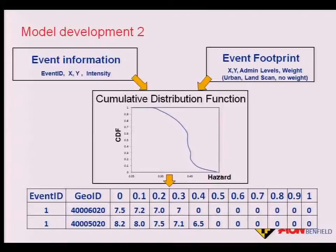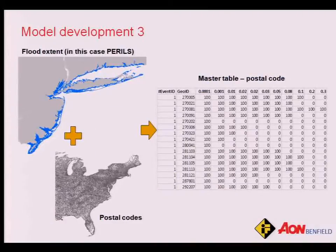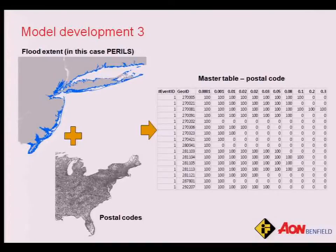Here's a more graphical example for floods, showing how we bring it together — flood extent, postal codes, one event, and the administrative zones that event affects. In these models the tables are made of millions and millions of rows, because we've got hundreds of thousands of events and each one affects a certain number of zones, so it gets pretty big pretty quickly.